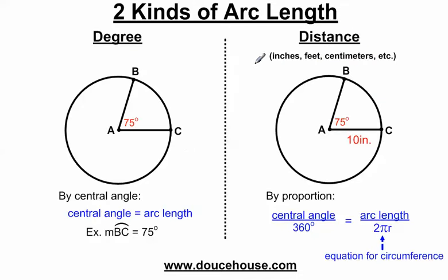So, there are two kinds of arc length. One is measuring by degrees, the other one is measuring by distance. When I say by distance, I mean like inches, feet, centimeters — something you can measure with a ruler.